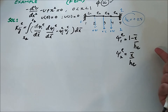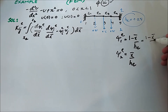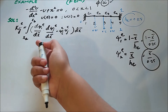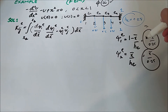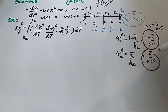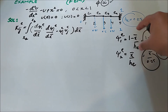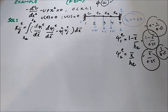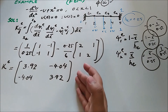Recalling the shape functions: ψ₁ = 1 − x̄/0.25 and ψ₂ = x̄/0.25. Taking derivatives: dψ₁/dx̄ = −1/0.25 and dψ₂/dx̄ = 1/0.25. We plug these shape functions and their derivatives into the stiffness matrix integral and perform the integration to get the element stiffness matrix.